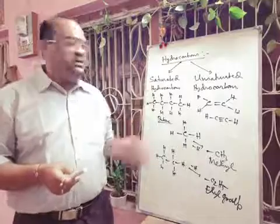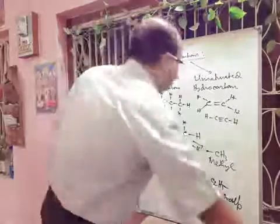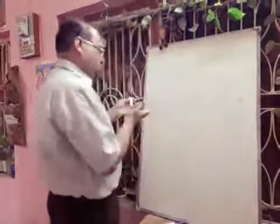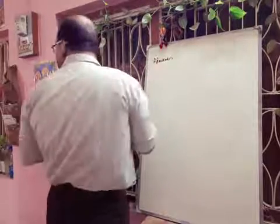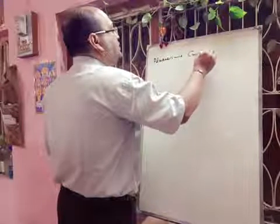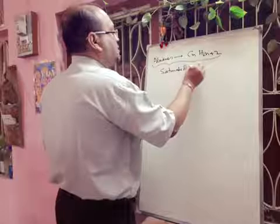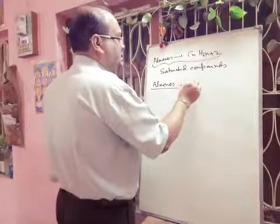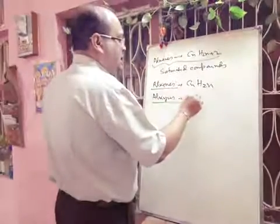Now, alkanes are saturated compounds. We can write their general formula. The general formula for alkanes is CnH2n+2 — these are saturated compounds. And alkenes have the general formula CnH2n, while alkynes have the general formula CnH2n-2.